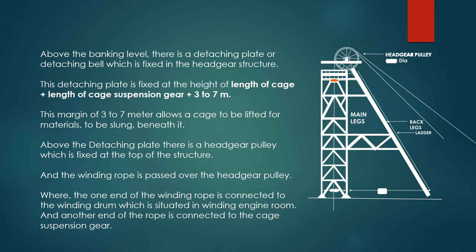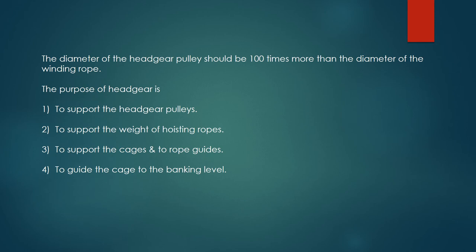Above the detaching plate, there is a headgear pulley, which is fixed at the top of the structure. The winding rope is passed over the headgear pulley, where one end of the winding rope is connected to the winding drum situated in the winding engine room, and the other end of the rope is connected to the cage suspension gear. The diameter of the headgear pulley should be 100 times more than the diameter of the winding rope.